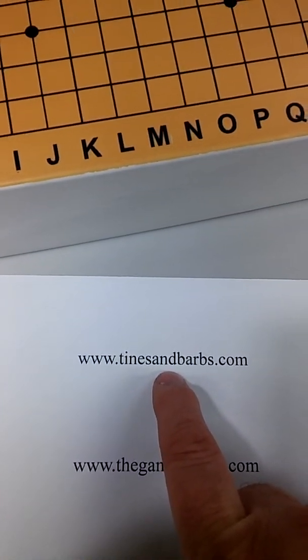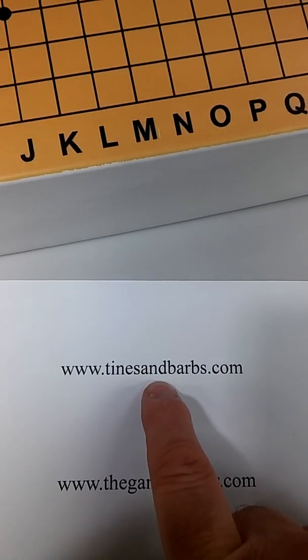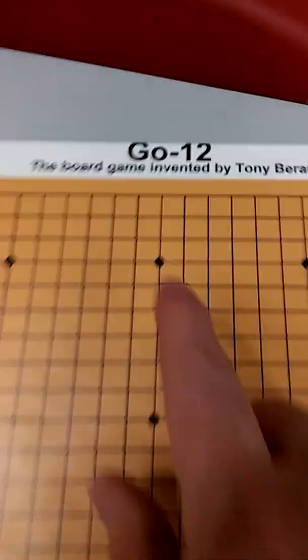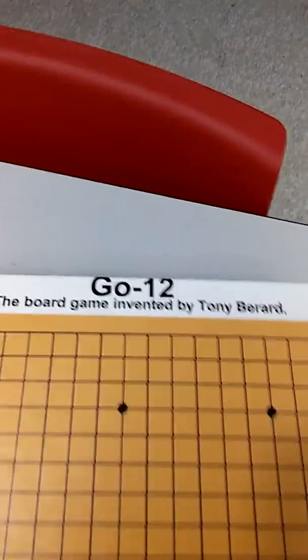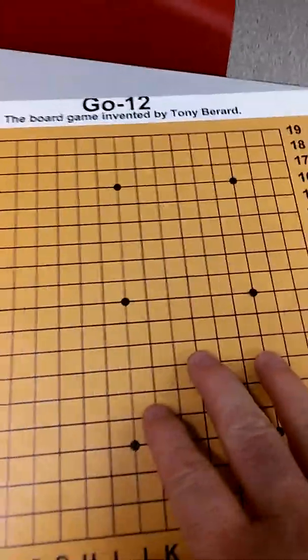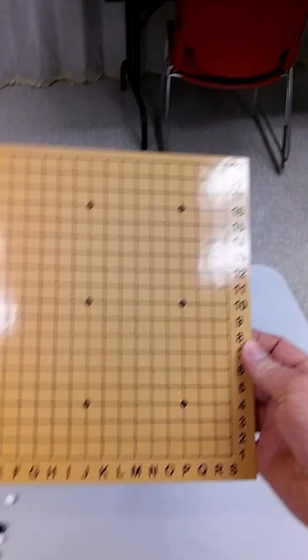Eventually we're going to be hosting this game on this website, www.tinesandbarbs.com. When you order this game from thegamecrafter.com, you could put in a search for Go or Go-12 and you'll find the game and you can order it then. You'll get this box and in the box, you'll get this board, this board here.